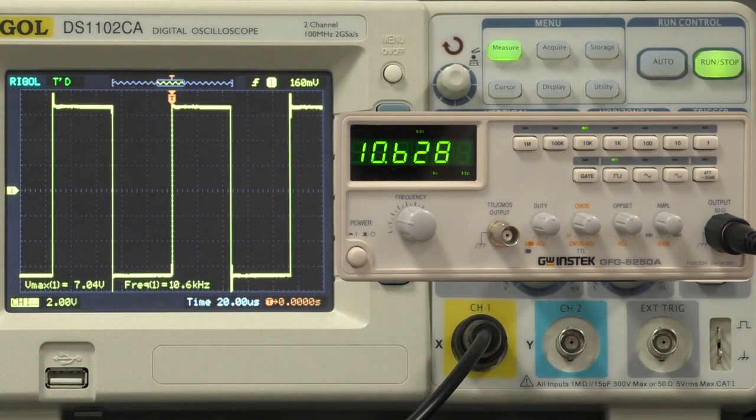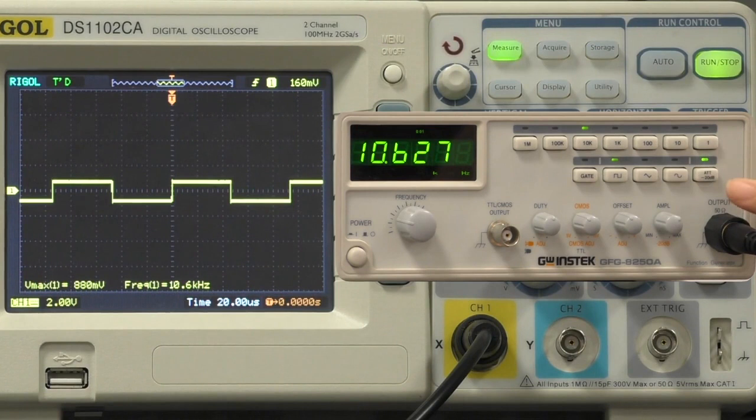With attenuation you can do it two ways. The first one is the button here, the last button on the second row. Once you press this, that's actually taking 20dB off your wave. So that's decreased it by 10 times. And you can see the waves shrunk.